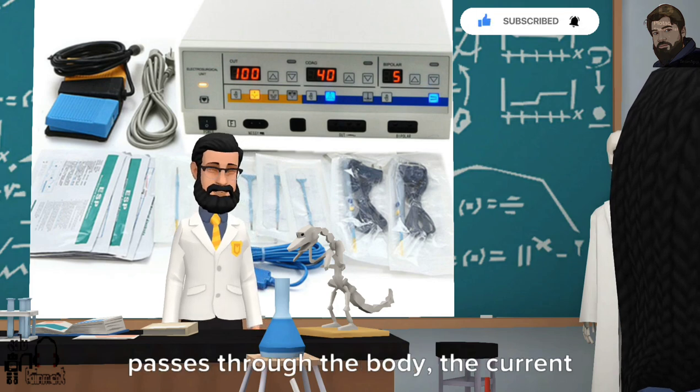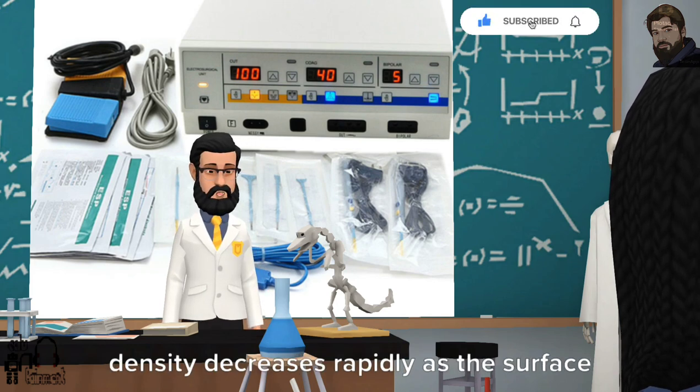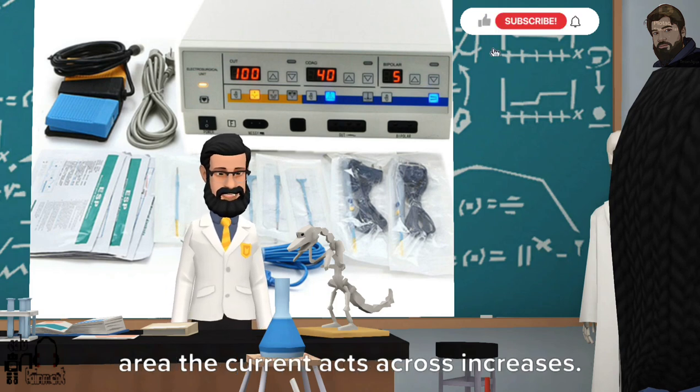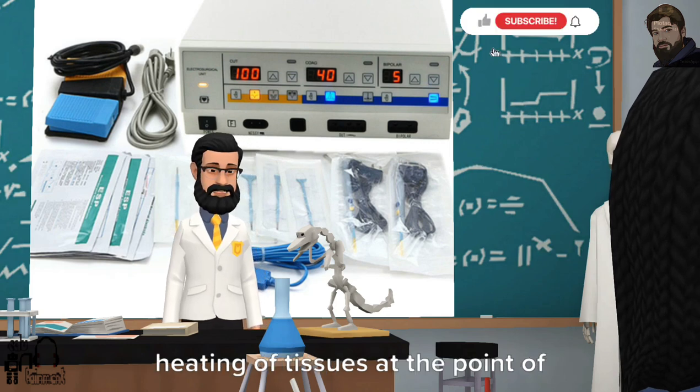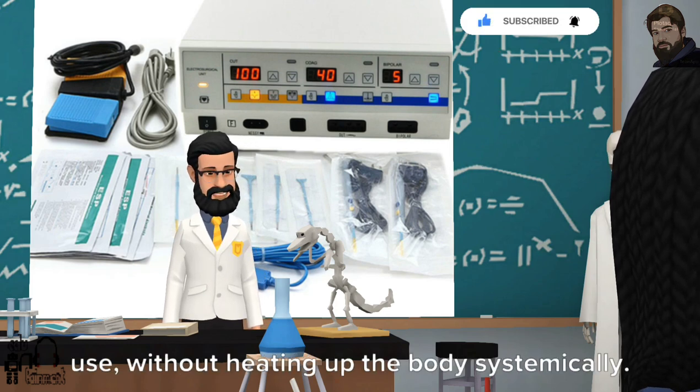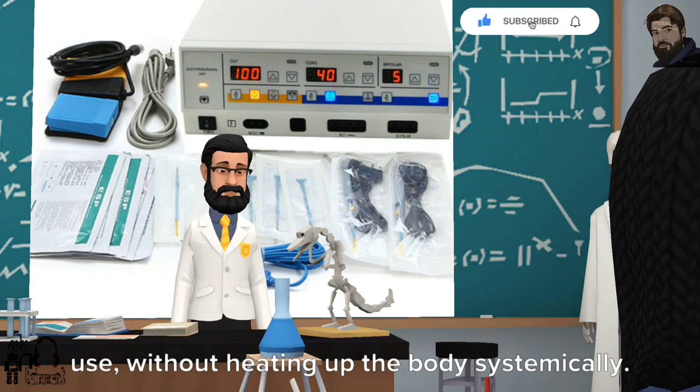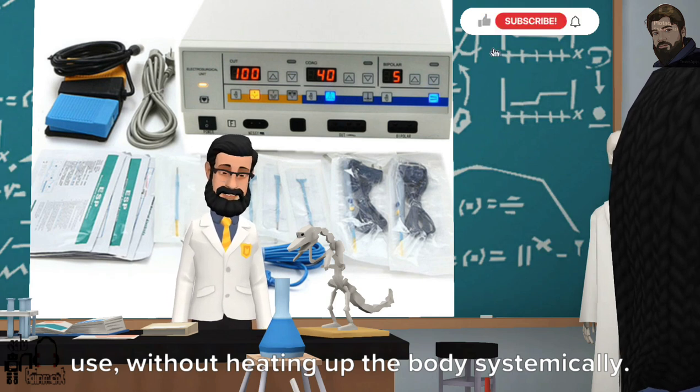In monopolar diathermy, as the current passes through the body, the current density decreases rapidly as the surface area the current acts across increases. Consequently, this allows for focused heating of tissues at the point of use without heating up the body systemically.